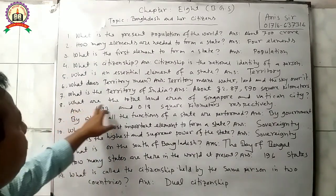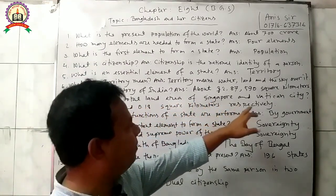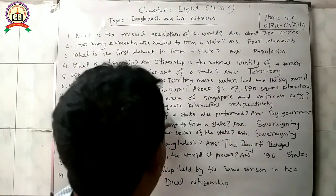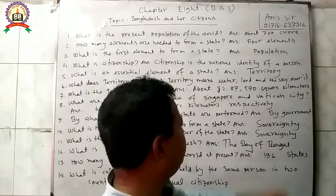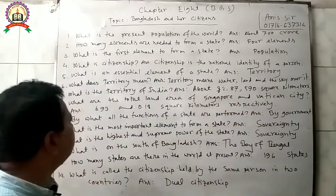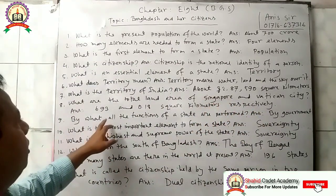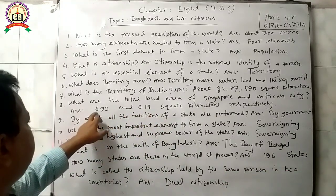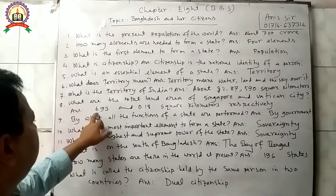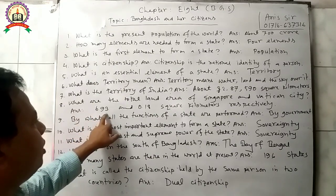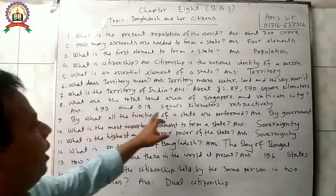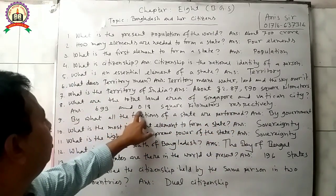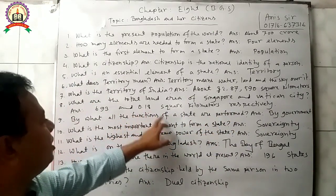Question 8: What are the total land areas of Singapore and Vatican City? Answer: The land area of Singapore is 693 square kilometers and the area of Vatican City is 0.18 square kilometers.